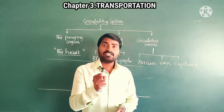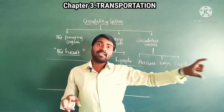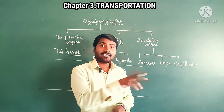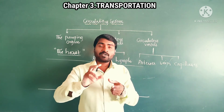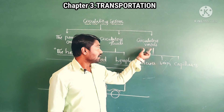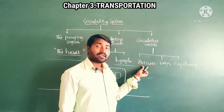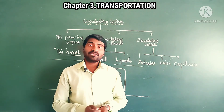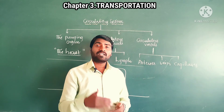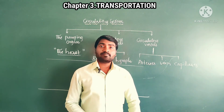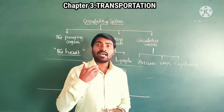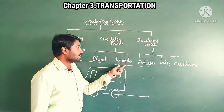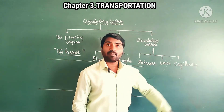The heart acts like an engine for pumping blood. Blood is the vehicle which transports all those materials through closed vessels — the circulatory vessels: arteries, veins, and capillaries. So the circulatory system consists of the pumping heart, circulatory fluids blood and lymph, and circulatory vessels — arteries, veins, and capillaries.